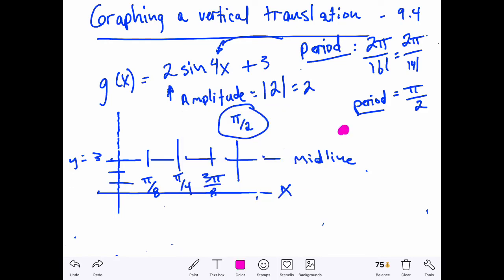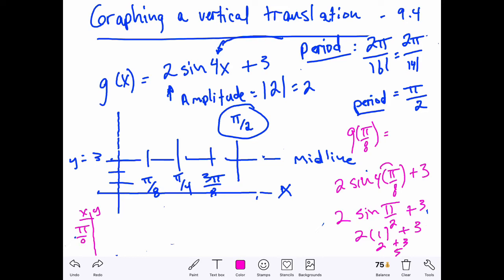Once I have those locations, that's when I want to make a table and start evaluating. So g of pi eighths, well that'd be two sine of four times pi eighths plus three. Four times pi eighths would be the sine of pi halves. The sine of pi halves, that would be 90 degrees, pi halves, sine corresponds to y, y is one at that location. Times two plus three, two times one is two plus three is five. So pi eighths is five.